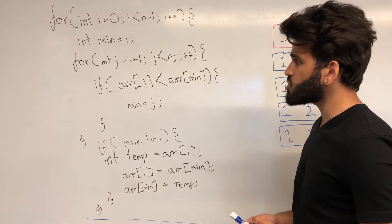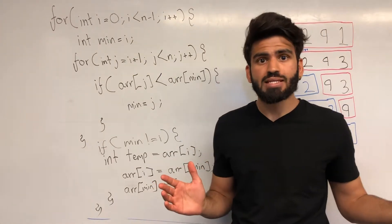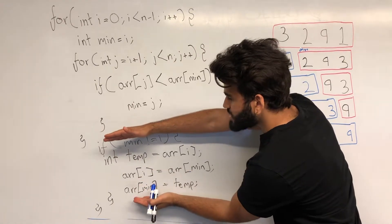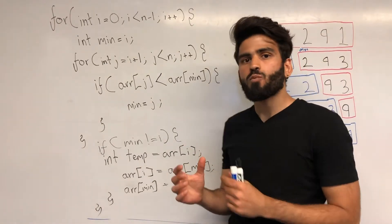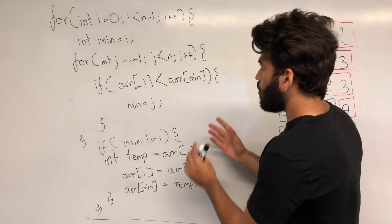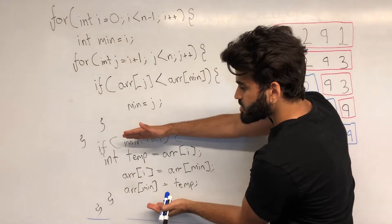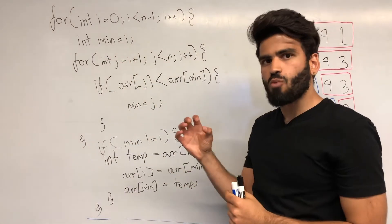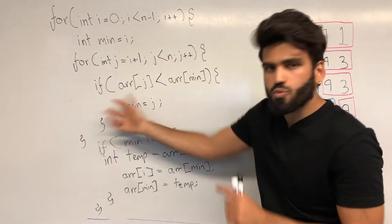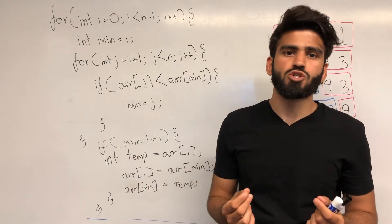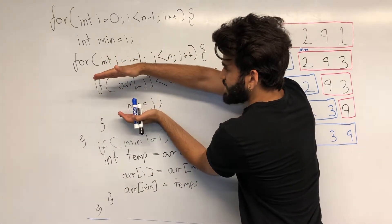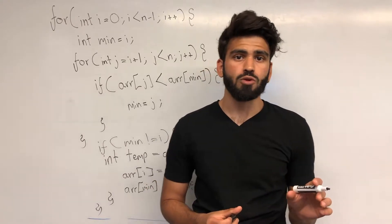The reason Selection Sort is more efficient on average than Bubble Sort is this: in Bubble Sort, the swap — those three lines of code — was happening inside the inner loop, so every time we found a smaller value we kept swapping, which created that bubbling effect. In Selection Sort, instead of swapping on every comparison, we just reassign a variable to track the correct index, and only perform the actual swap once we exit the inner loop. So the total number of swaps in Selection Sort is far fewer than in Bubble Sort, which is what makes it more efficient.